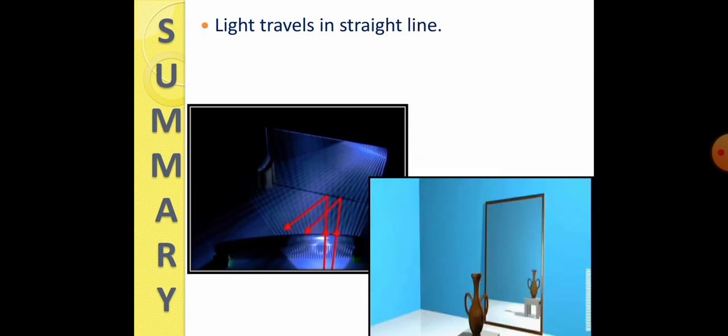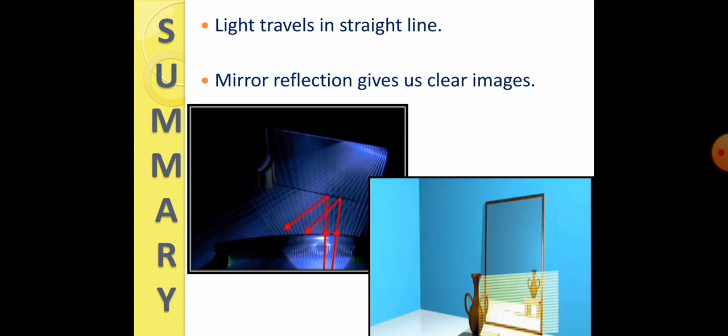And last point is, mirror reflection gives us clear image. Okay. And this is just because of plane mirror. And from here, it is reflecting back. So, mirror always gives us the clear image. So, this was the summary of the chapter, light, shadows, and reflections. Thank you.